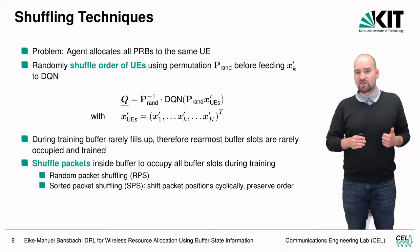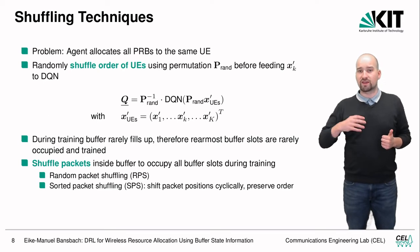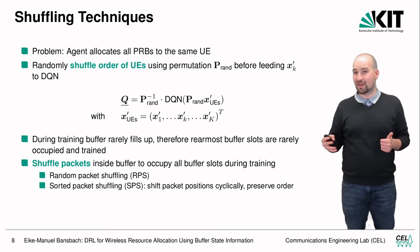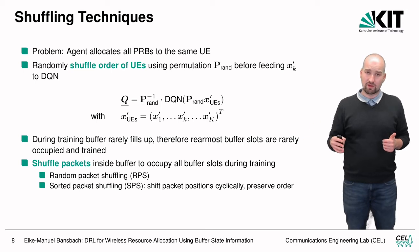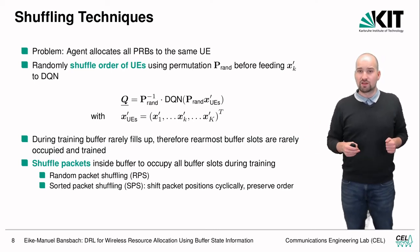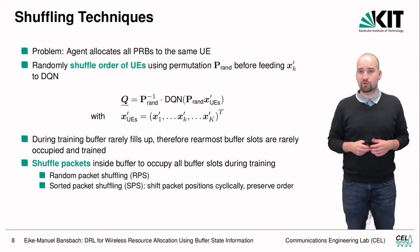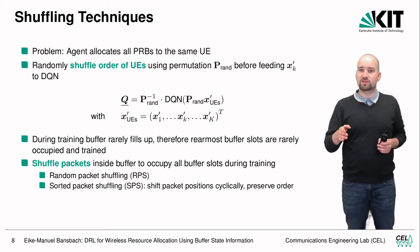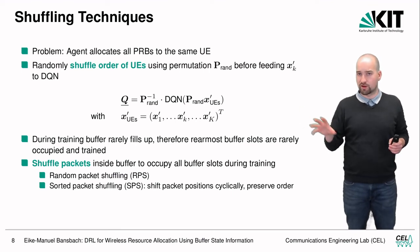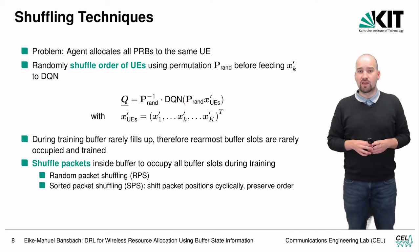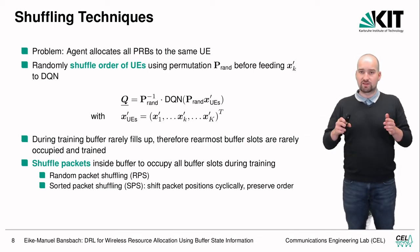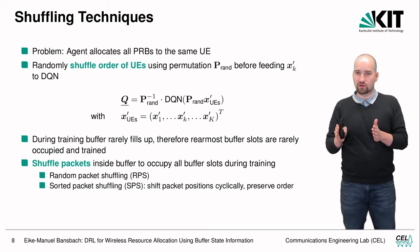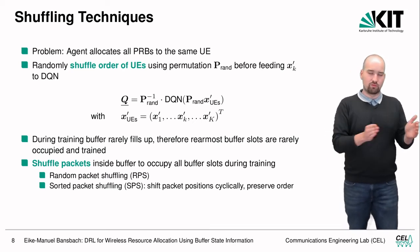Due to limited training time, we sometimes don't have packets in the rearmost buffer slots, so during evaluation the agent may encounter packets in positions it never saw during training. To address this, we introduce packet shuffling: random packet shuffling places packets anywhere in the buffer, while sorted packet shuffling preserves packet order but shifts all packets toward the back of the buffer, ensuring the agent encounters packets at rear slots during training.